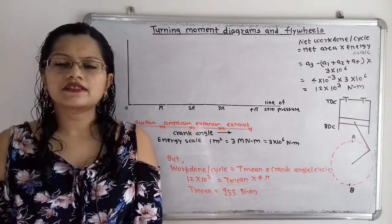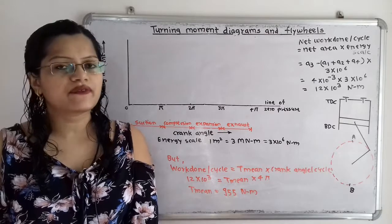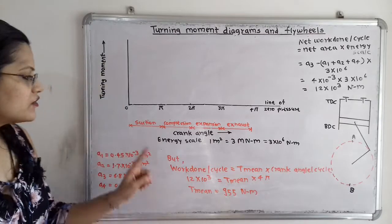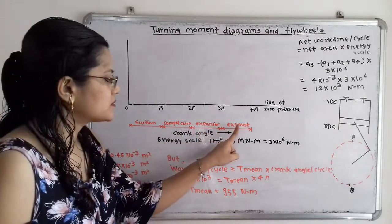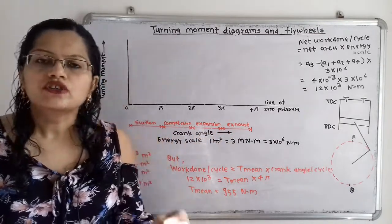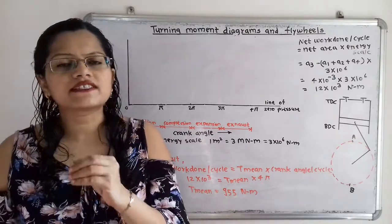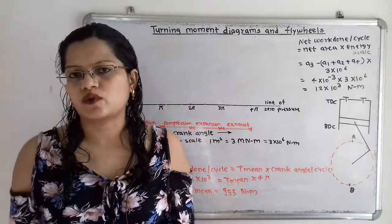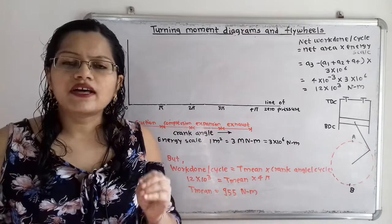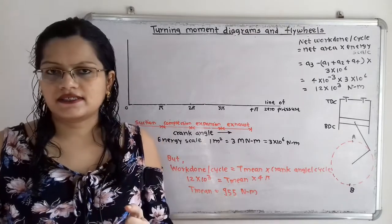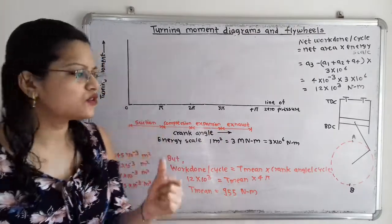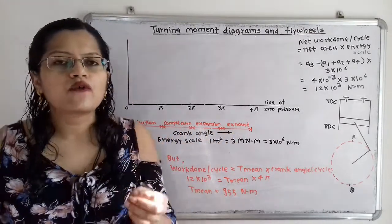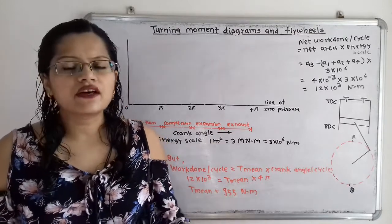Let us first understand how to draw the turning moment diagram with the help of the working of a four stroke engine. In a four stroke engine, the four strokes are suction, compression, expansion, and exhaust. In the expansion stroke, power is produced, which is why it is also known as the power stroke. Work is done by the gases in the expansion stroke, while in the suction, compression, and exhaust strokes, power is consumed — that is, work is done on the gases.